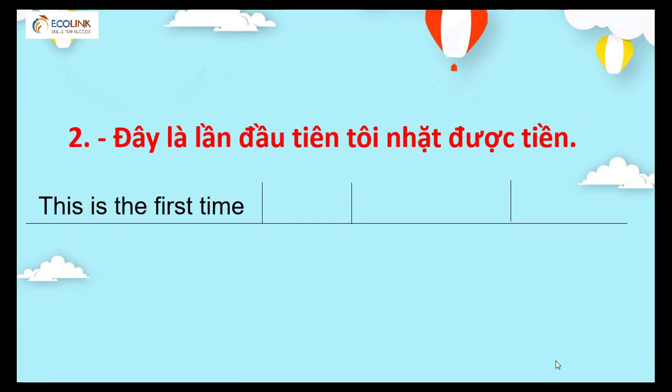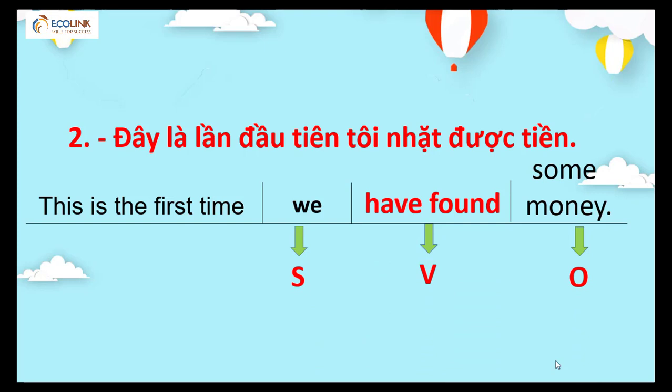Vậy ta có: 'This is the first time we have found some money.' Chủ ngữ we, 'have found' là động từ hiện tại hoàn thành. Động từ tìm kiếm là find, chuyển sang phân từ 2 là found. 'Have found some money.' This is the first time we have found some money.